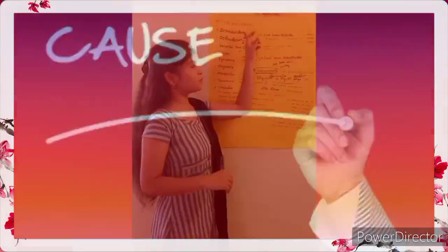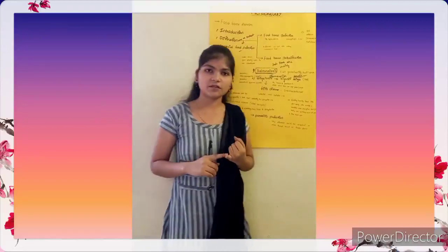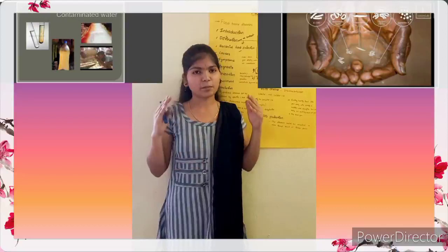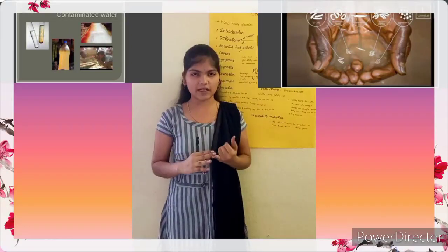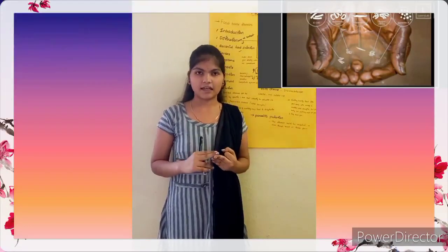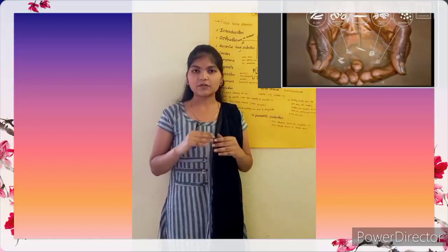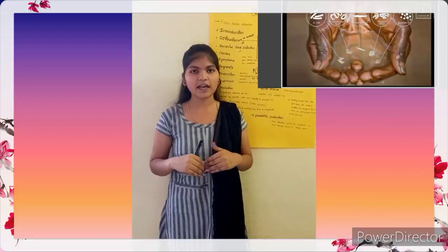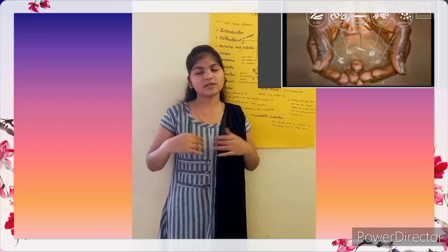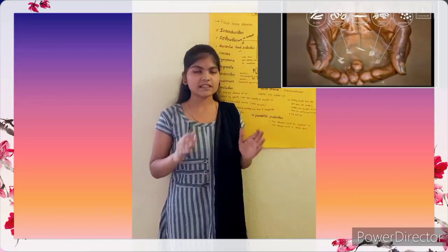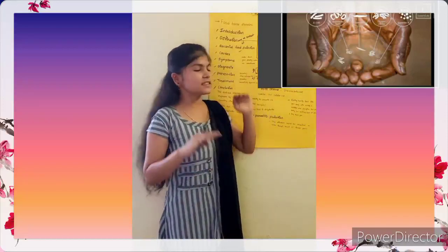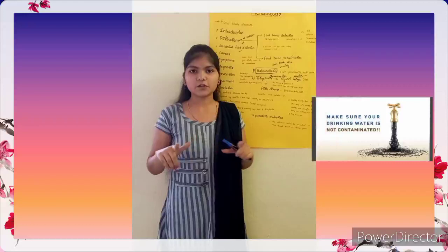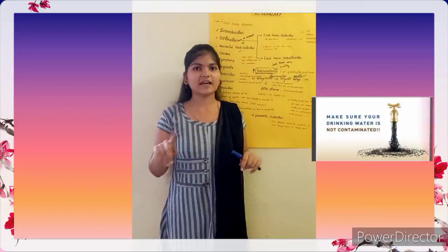The causes of foodborne diseases are contaminated food and contaminated water. Contaminated water contains many organisms like E. coli, Hepatitis A, cholera, and Salmonella. If we drink contaminated water, all these microorganisms get into our body and can destroy it. Please do not consume contaminated food and water, and make sure your drinking water is not contaminated.